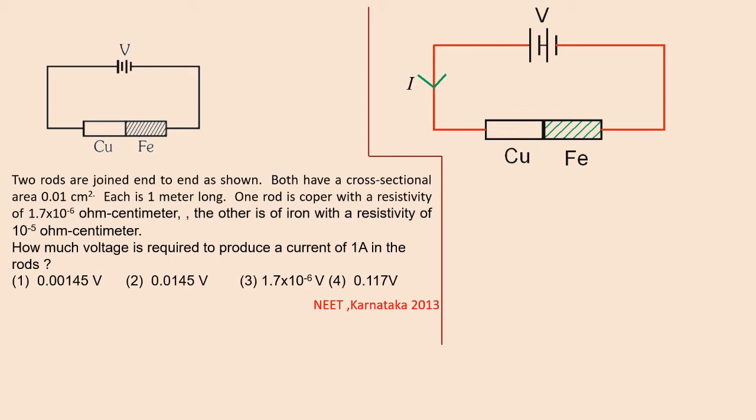Voltage across this iron, V₂, is IR₂. Total voltage will be equal to this voltage. So total voltage is V₁ + V₂.